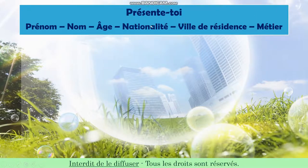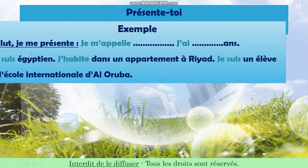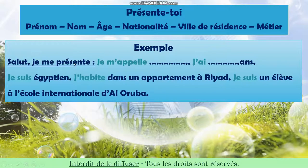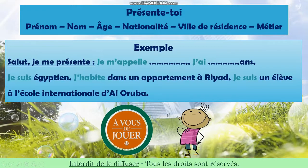Présente-toi — Introduce yourself. Prénom means your name, Nom means your father's name, Âge means your age, Nationalité means your nationality, Ville de résidence means the city you live in, and Métier means your job. For example: Je me présente — I present myself. Je m'appelle Ali. J'ai 10 ans. Je suis Égyptien. J'habite dans un appartement à Riyad. Je suis un élève à l'école à l'Auroba Internationale.